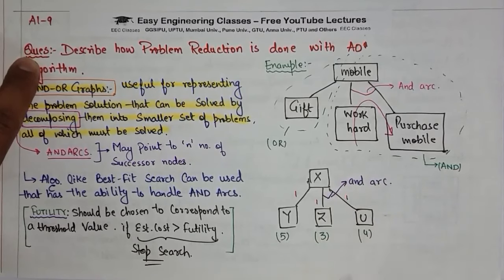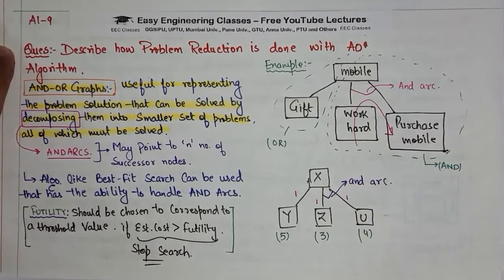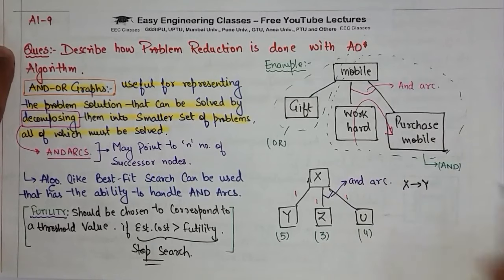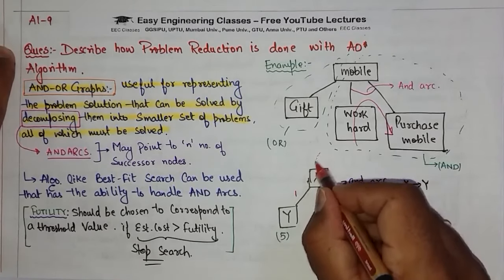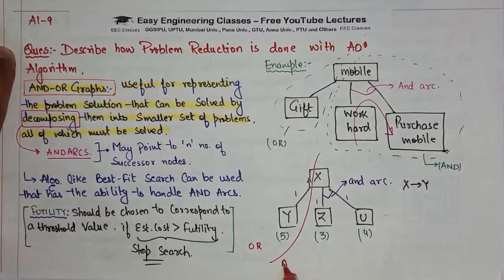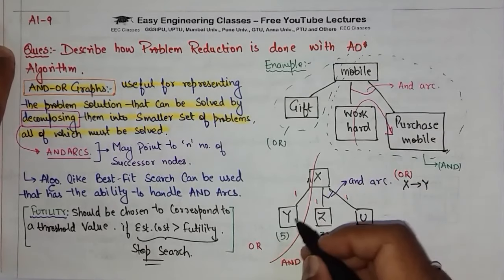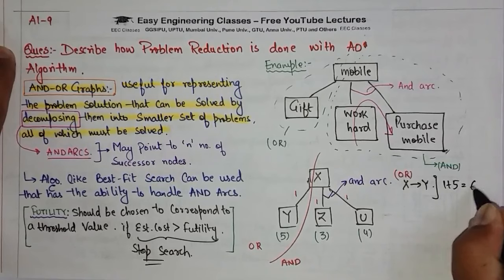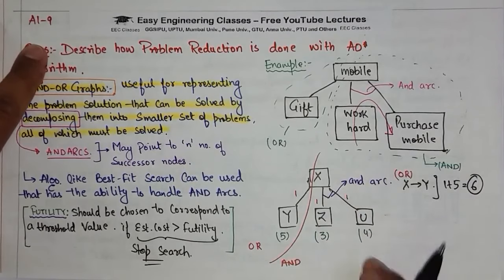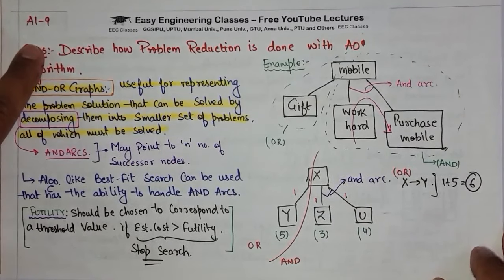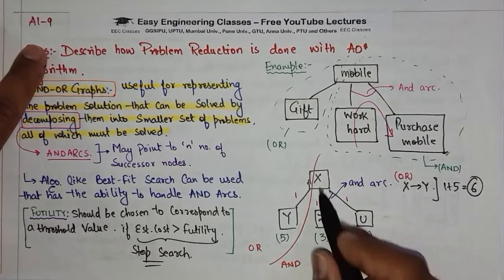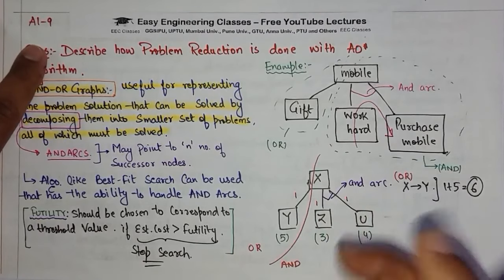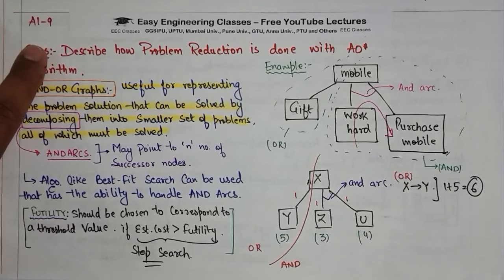The AND-OR graph given has AND arc connecting Z and U. For the OR part, X to Y is simple: if we go to the heuristic, X to Y is 1 plus 5, that is 6.